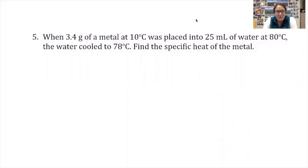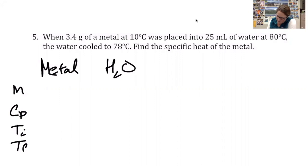Number five is another problem where we're plunking metal into water and we're looking for the specific heat of the metal. So I'm again going to approach it as setting up two columns, one for metal and one for water. I'm interested in the mass, the specific heat, the starting temperature, the final temperature, and the change in temperature.